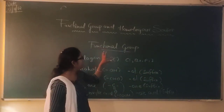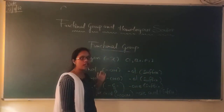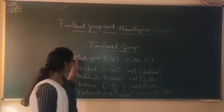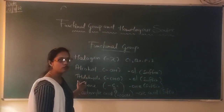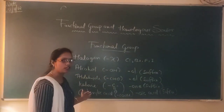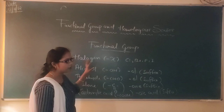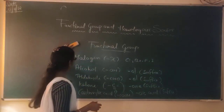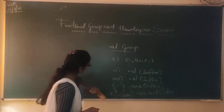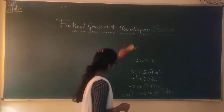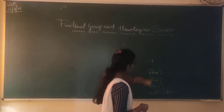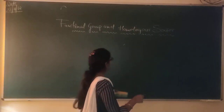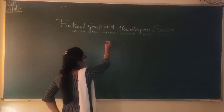So today we will learn about these five functional groups: halogen, alcohol, aldehyde, ketone, and carboxylic acid. So one by one, hum start karte hain ki kis tarah se aap halogen ka naam de sakti ho, ya alcohol ya carboxylic acid. So first is halogens.